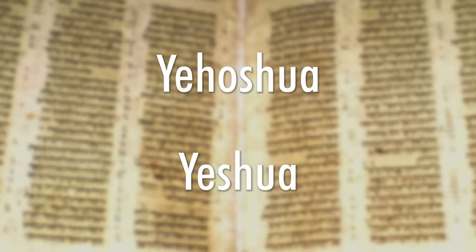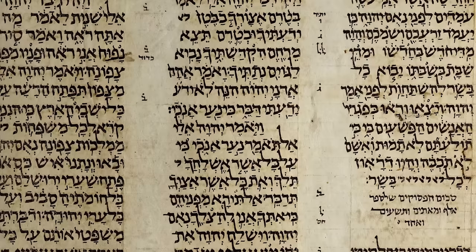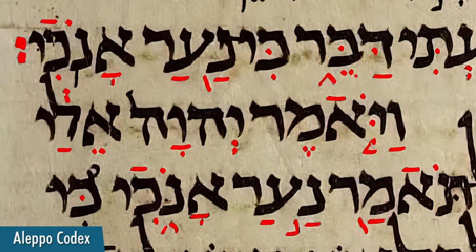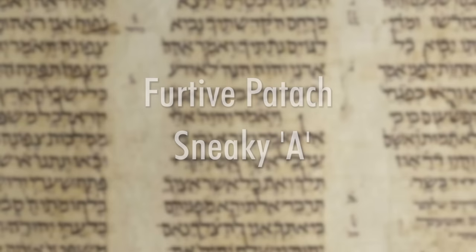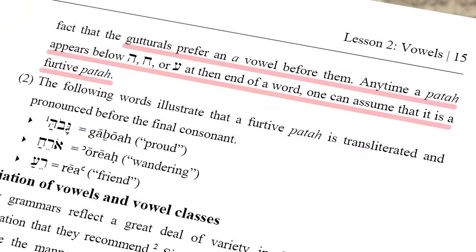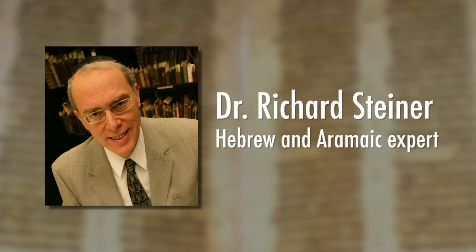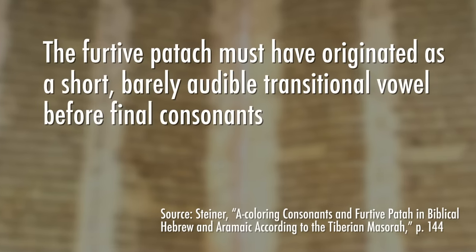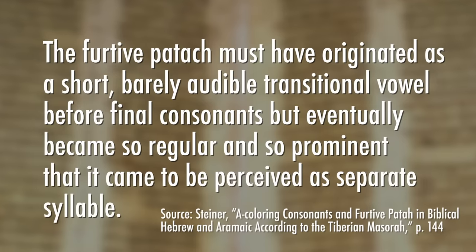Remember, these two names for Joshua appear in Hebrew Bible manuscripts. Throughout late antiquity and into the medieval period, hundreds of years after Jesus, Jewish scribes called the Masoretes started adding vowel markers, alerting readers what vowels they should use to correctly pronounce words in the Hebrew Bible. One of these vowel markers is called a furtive patach — also known as the sneaky A. It's a little line added below a guttural letter if it appears at the end of a word, because in biblical Hebrew guttural letters prefer an A vowel before them. As scholar Richard Steiner says, the furtive patach must have originated as a short, barely audible transitional vowel, but eventually became so regular and prominent that it came to be perceived as a separate syllable.